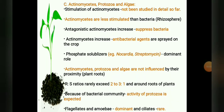The last group of organisms are actinomycetes, protozoa, and algae. Stimulation of actinomycetes in the rhizosphere has not been studied in much detail so far. It is generally understood that actinomycetes are less stimulated in the rhizosphere than bacteria. However, when antagonistic actinomycetes increase in number, they suppress the bacteria. Actinomycetes may also increase in number when antibacterial agents are sprayed on the crop. Among the actinomycetes, phosphate solubilizers like Nocardia and Streptomyces have a dominant role to play.